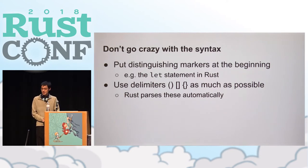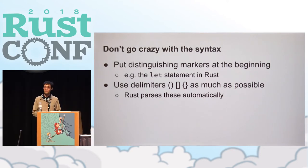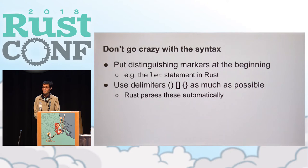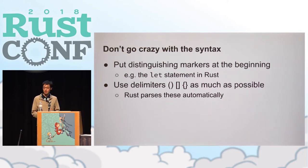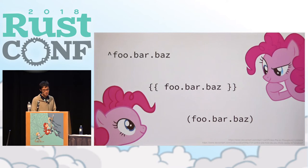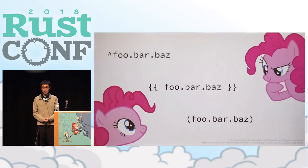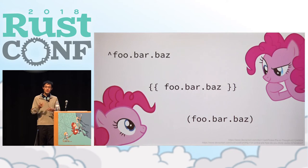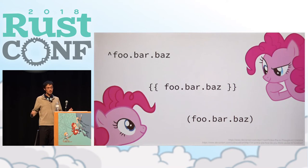Use delimiters — parentheses, square brackets, and braces — as much as possible. One of the few things the macro API gives you is that it groups these delimiters automatically. So if you build your syntax around these delimiters, not only will it look more consistent with the rest of Rust, it'll also make your job much easier because you don't have to match them up yourself. One example of where these two principles apply is in the syntax for substituting dynamic content — if you've used a templating language like Handlebars or Mustache, you'd know that you wrap an expression in braces to include it at runtime.